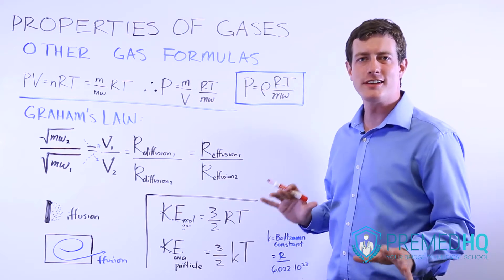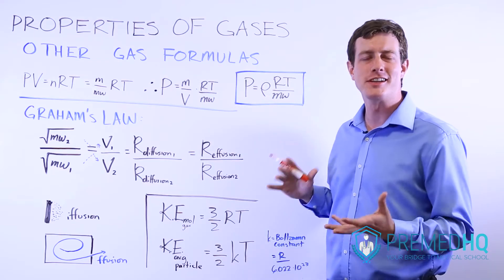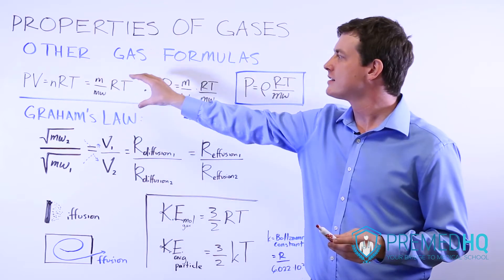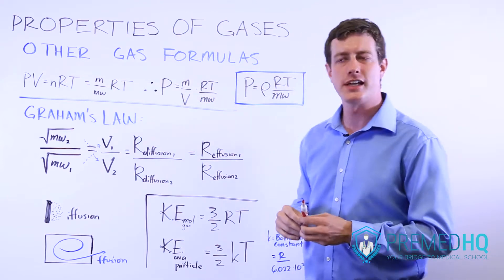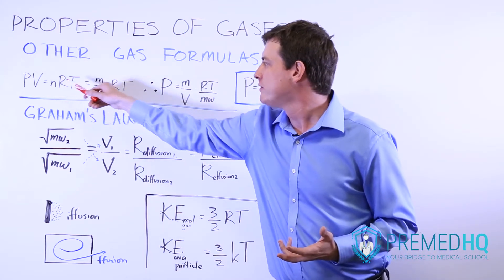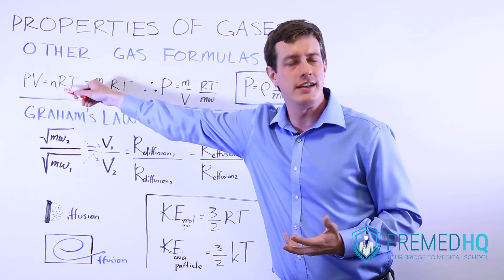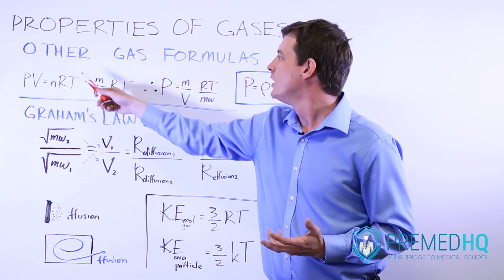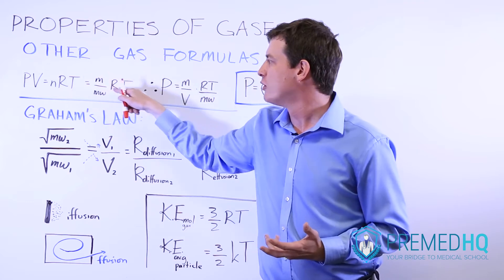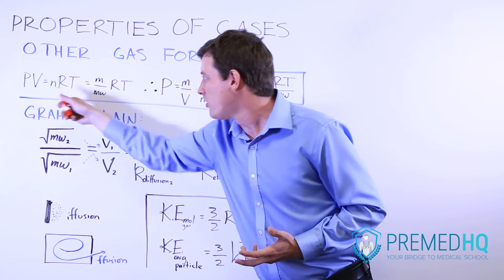As we conclude our section on gases, we'll go through a few other gas formulas or variations you might encounter. The first is a proof that gets us to another version of the ideal gas law. We'll take PV = nRT and use the fact that mass in grams divided by molecular weight equals n, the number of moles. So PV equals mass over molecular weight times RT.